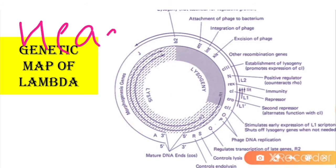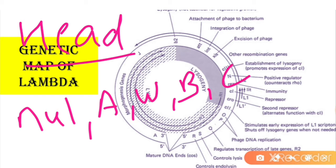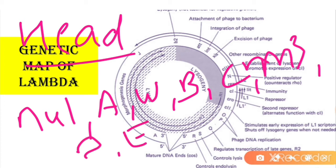The genes required for head formation are: N, U, V, L, A, W, B, C, M, Nu3, D, E, and F. These genes are located at the left side of the phage genetic map.